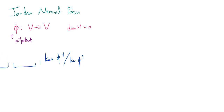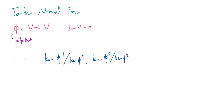So we actually have an infinite chain to the left. And then we have kernel of phi cubed modded out by kernel of phi squared, kernel of phi squared modded out by kernel of phi, and finally we can just have kernel of phi.